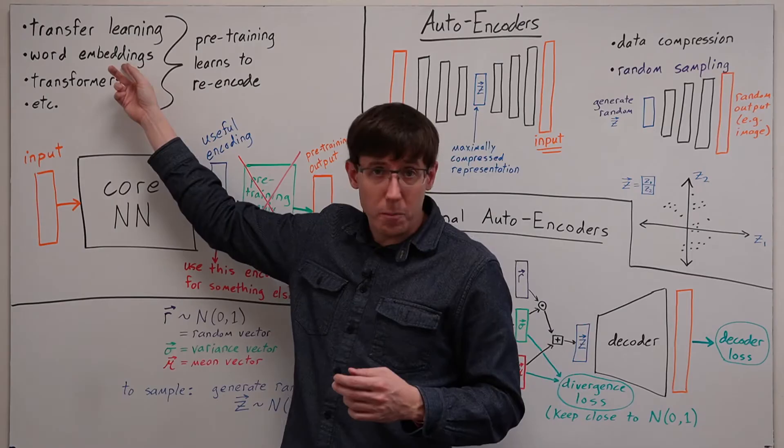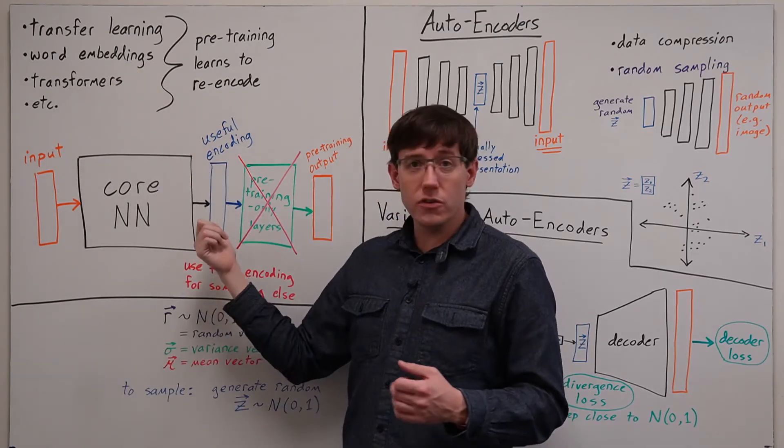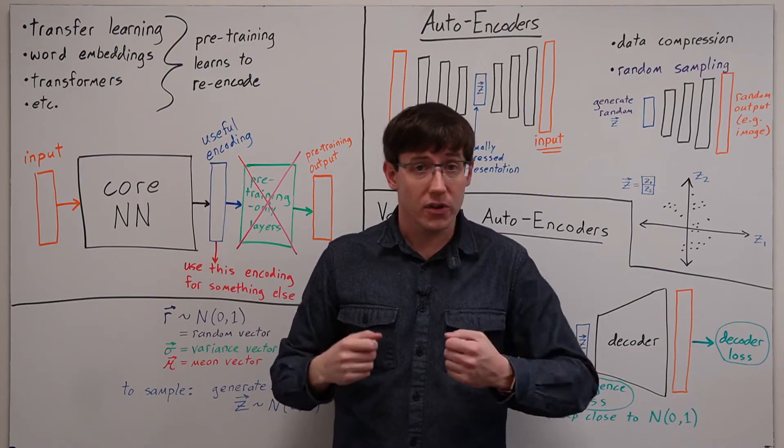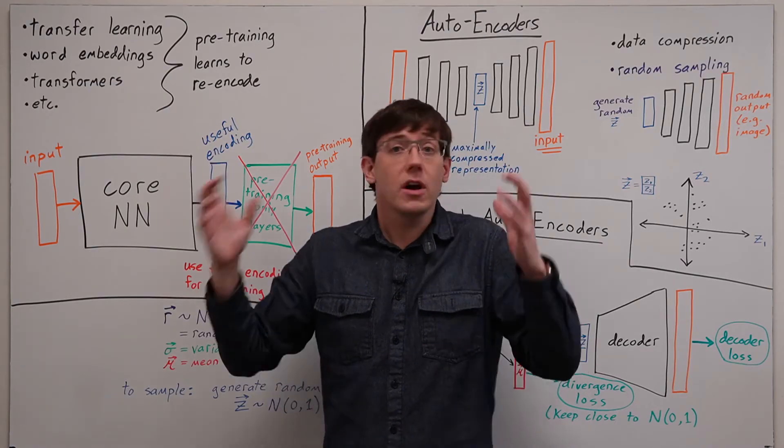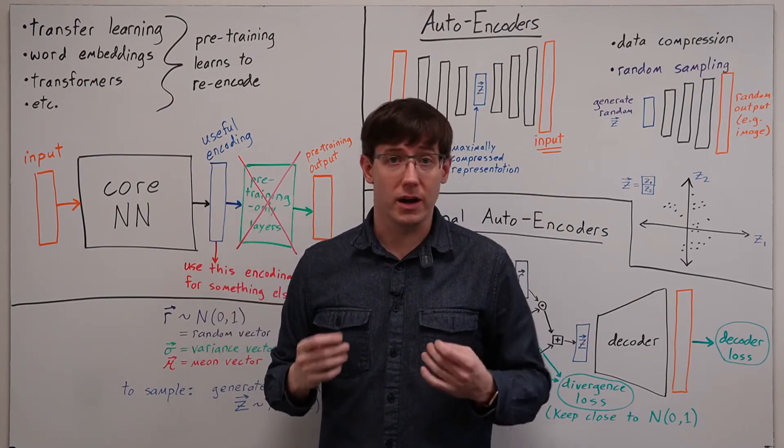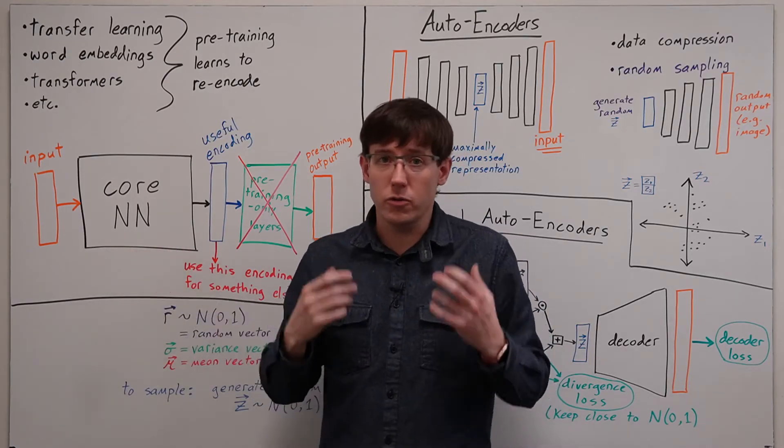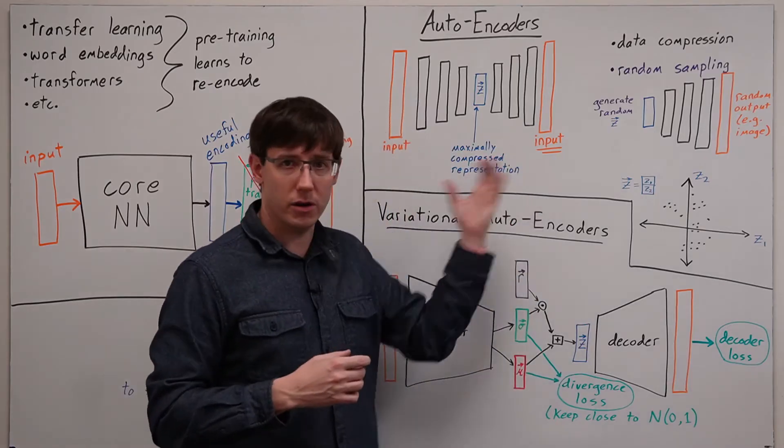Likewise, with word embeddings, producing this sort of data encoding is explicitly the purpose of the learning, and this comes up in all sorts of other contexts as well. The deep learning model that takes this idea to its extreme is the autoencoder.